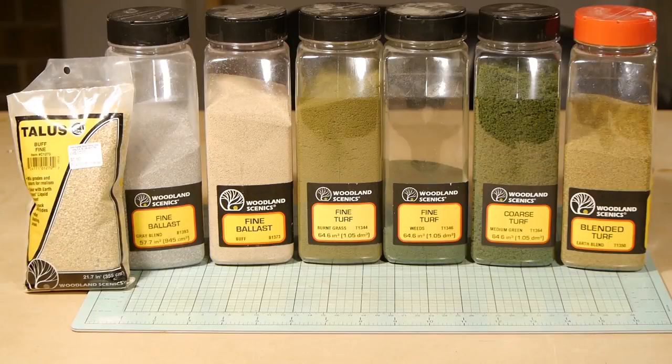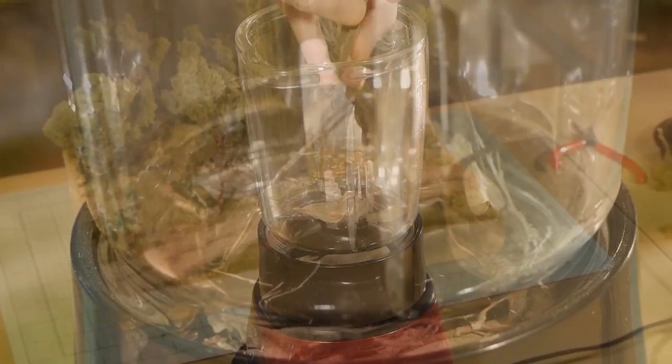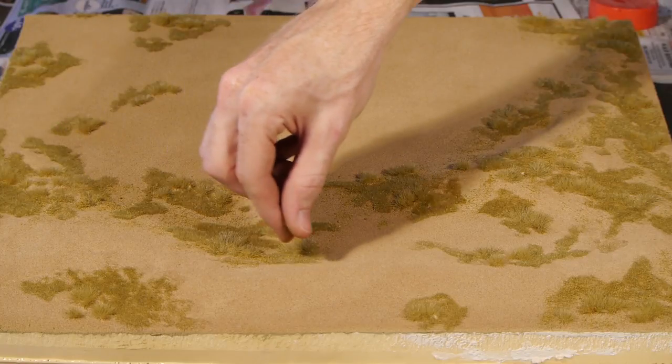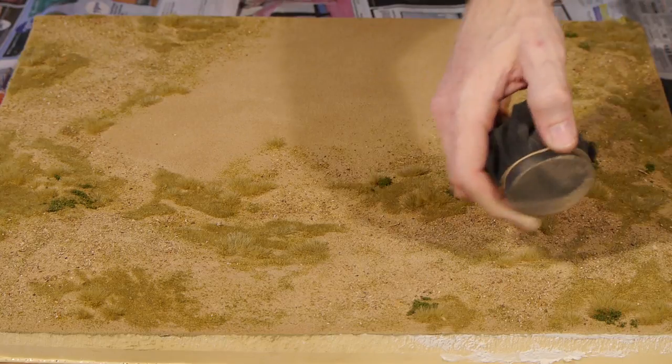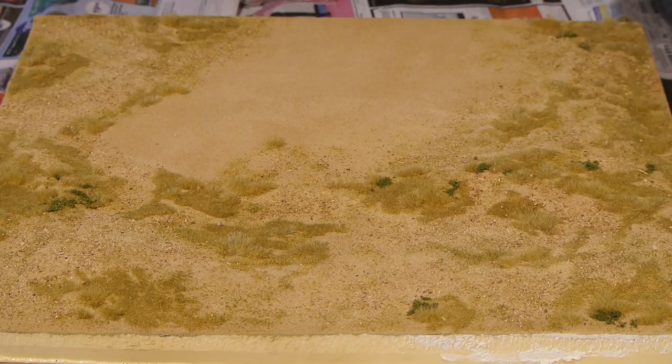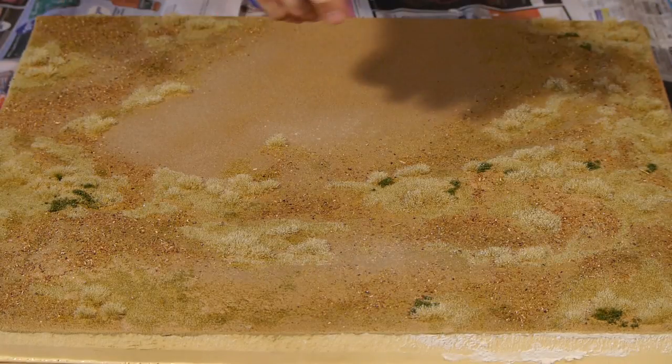Additional ground cover is made up using a variety of Woodland Scenics ground foam as well as some brown sand, some leaves and bark I put through a blender and more of my dirt texture. I try to use dull colours like burnt grass and earth blend from Woodland Scenics. The static grass is made up using beige and late fall colours. Once that's done seal it all in place with alcohol and scenic glue.